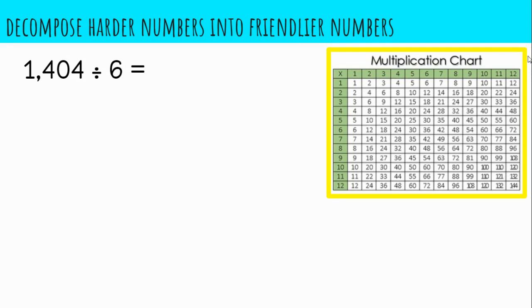Considering our multiples of 6, what multiple of 6 can be used as part of 1,404? Knowing that 6 times 2 is 12, so 6 times 20 is 120, and 6 times 200 is 1,200.